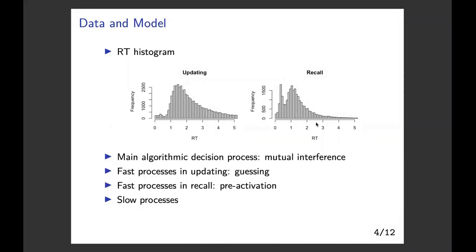Here we show the reaction time histograms from this study. Seeing from the histograms, both the updating and recall stages involve bimodality in the reaction times. From our pre-analysis, we consider that four processes might have contributed to the bimodality. The first is the main algorithmic decision processes corresponding to the two peaks, and we assume that they may be affected by mutual interference in working memory. The second is the fast processes in working memory updating, which might be a result of guessing. The third are the fast processes in working memory recall, which might be a result of pre-activation of the list of items to be recalled later. The last are the slow processes. In our modeling, we use a mixture to account for the latter three processes, so that they do not confound the results from the main algorithmic decision processes.